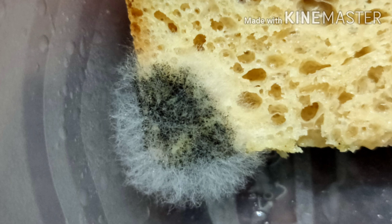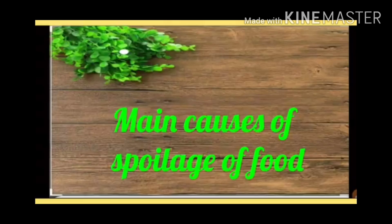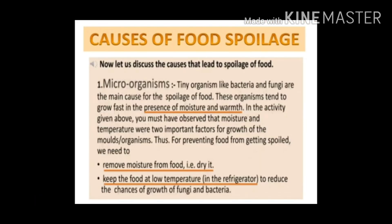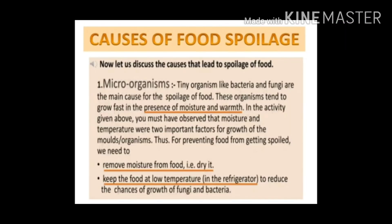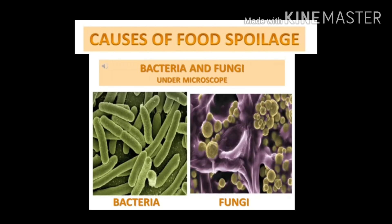The first cause is microorganisms. 'Micro' means very small — so small that they cannot be observed with the naked eye; they are observed under the microscope only. These are tiny organisms like bacteria and fungi, and these are the main cause for the spoilage of food.